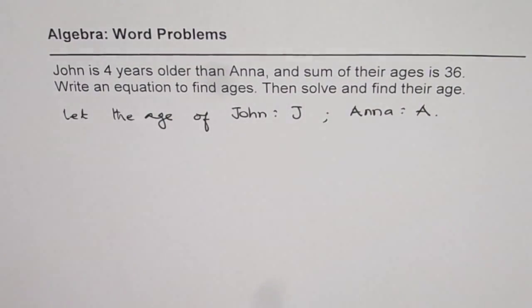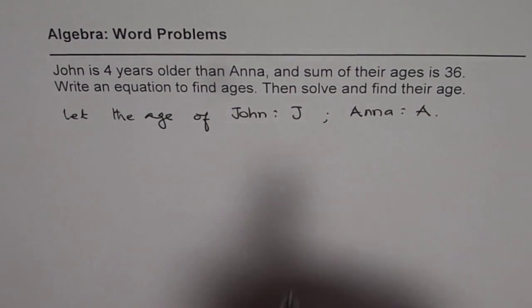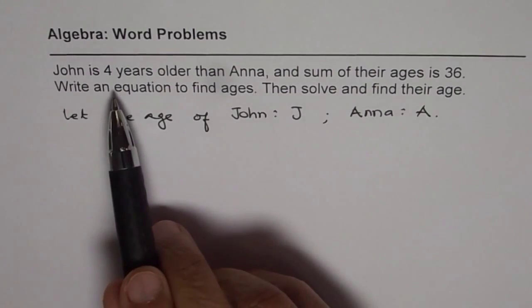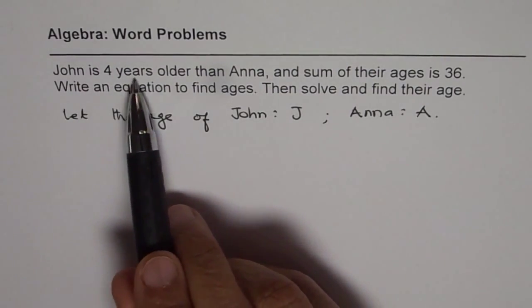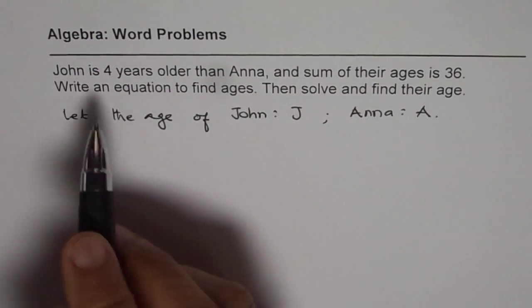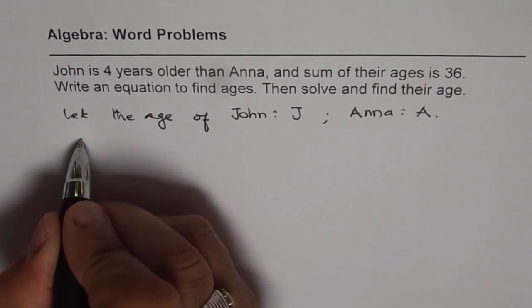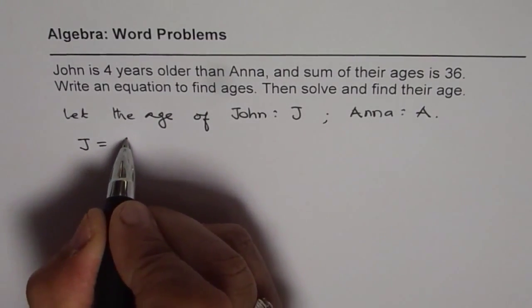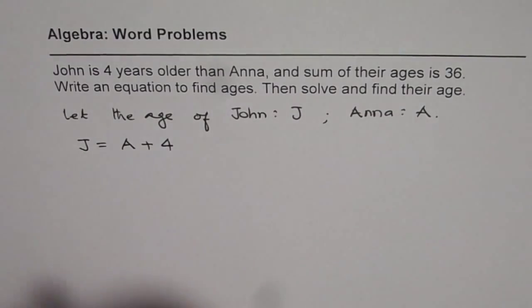Let's define the variables first, then we'll write the equations. It says John is 4 years older than Anna. So John is Anna's age plus 4. So we get the first equation.